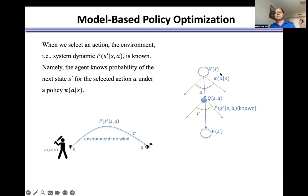That means we start from state S, and the policy pi, we select action A in action space. We know exactly the probability from state S to state S prime.